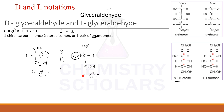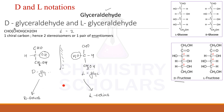Remember, D and L notations have nothing to do with dextrorotatory and levorotatory. It is just a way of explaining the differences in the structures of the carbohydrates. We always start with glyceraldehyde, and all the carbohydrates derived from D-glyceraldehyde are your D series of carbohydrates. All carbohydrates derived from L-glyceraldehyde are L series. D and L are always mirror images of each other.